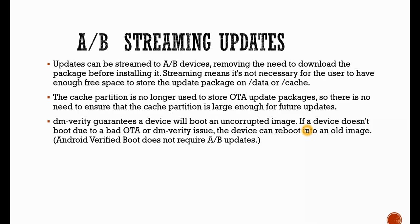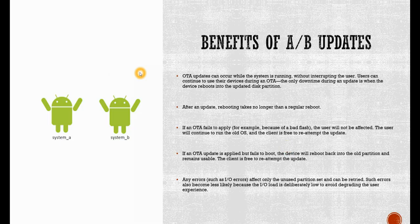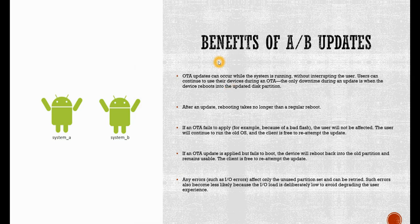If the device doesn't boot due to a bad OTA or DM verity issue, the device can reboot into an older image. So in summary, we saw non-AB system updates and AB system updates. Under AB, there are two types: seamless and streaming. The only difference is that in seamless, we download the entire package and save it on the device. In streaming, we do not need extra disk or storage space because it is installed as it is downloaded. When our device doesn't have enough memory, we can go for AB streaming updates.